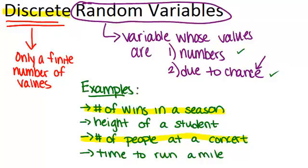So that's the idea of discrete random variables. The key thing is the values have to be numbers, they have to be due to chance and some sort of randomness. And to be discrete, there has to be only a finite number of values that the variable could take on, so that you should be able to list out all the possible values that it could have.